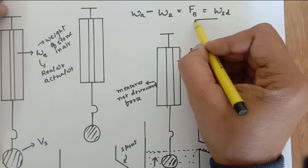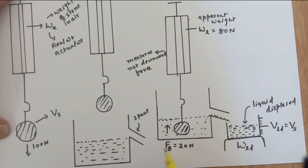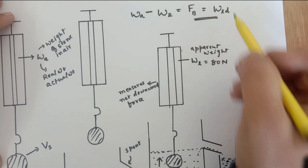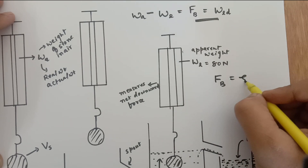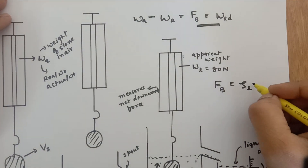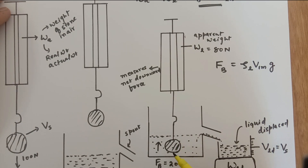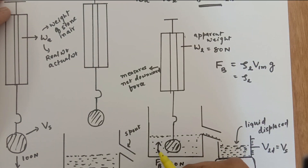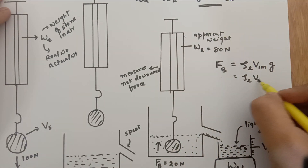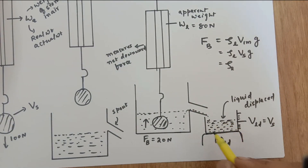Now we need to prove why these two are the same. It is clear that 100 minus 20 is 80, or 100 minus 80 is 20. We'll prove that upthrust and weight of liquid displaced are the same. Starting with upthrust: upthrust equals density of liquid times volume immersed times g. Since the stone is completely immersed, the volume is Vs, so upthrust equals ρ_l × Vs × g. The complete volume of the stone is also equal to the volume of liquid displaced.